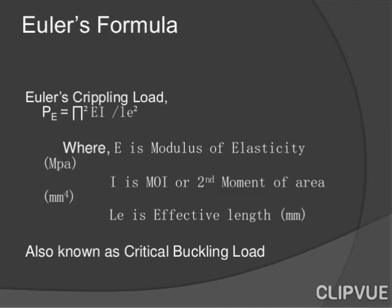Euler's formula: Euler's crippling load PE = π²EI / L², where E is the modulus of elasticity in MPa, I is the moment of inertia in mm⁴, and L is the effective length in mm. This is also known as the critical buckling load.